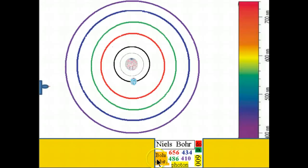Now let's have a look at the Bohr model. Double-left-click on "Bohr Orbits" under the name Niels Bohr and you can see the Bohr model. Immediately you see the difference from the Rutherford model: instead of one orbit, the Bohr model has several orbits. Let's have a look at what these orbits are for.